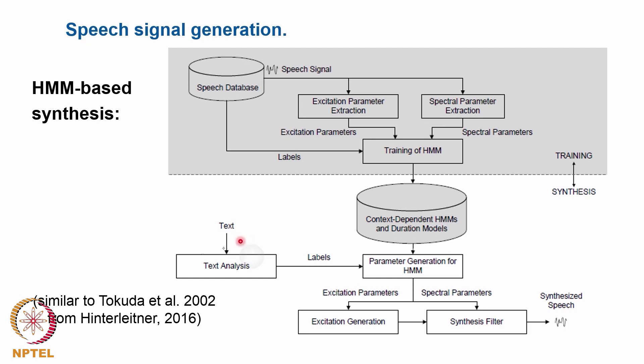In the second step, during the synthesis, the text is analyzed, the labels are extracted, and then this hidden Markov model helps you to generate an optimum set of parameters, both for the excitation and for the vocal shaping. And then these parameters can be used in a standard parametric speech synthesis process.